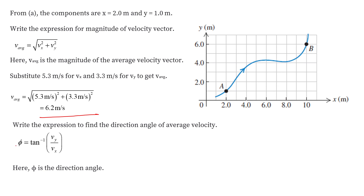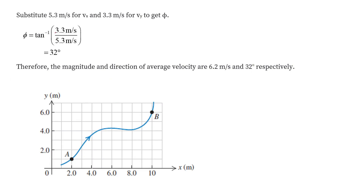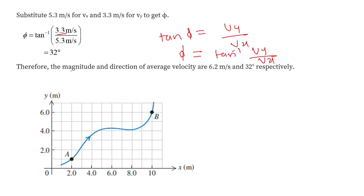Here, we have to find the value of angle phi. Let's draw the diagram to identify which angle is phi. We can write tan phi as the y component of velocity divided by the x component of velocity, so tan phi equals Vy divided by Vx. Taking the inverse of tan on both sides gives us phi equal to tan inverse of Vy divided by Vx. The value comes out to be 32 degrees. So we have found the magnitude and the direction of the average velocity: 6.2 meters per second at 32 degrees.